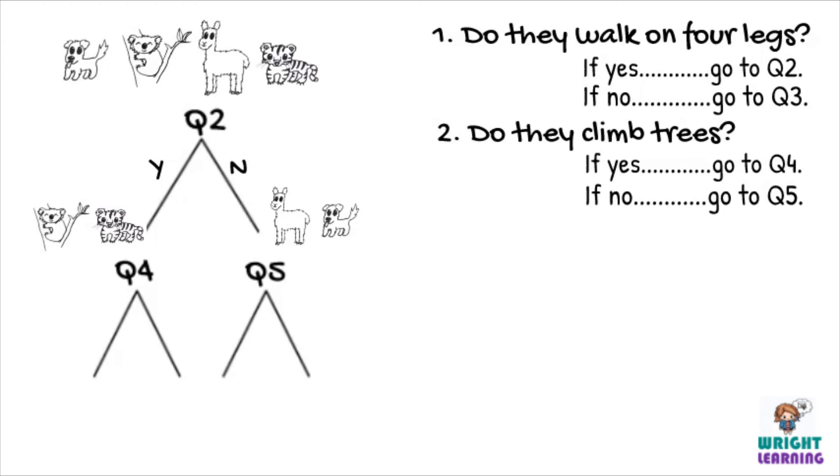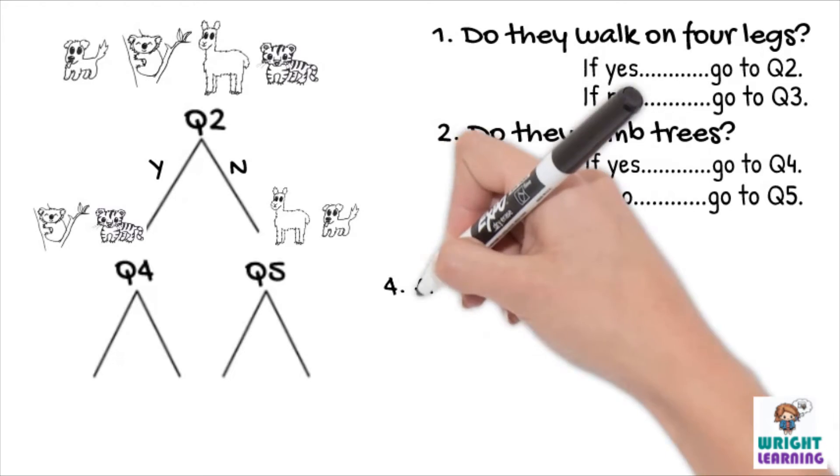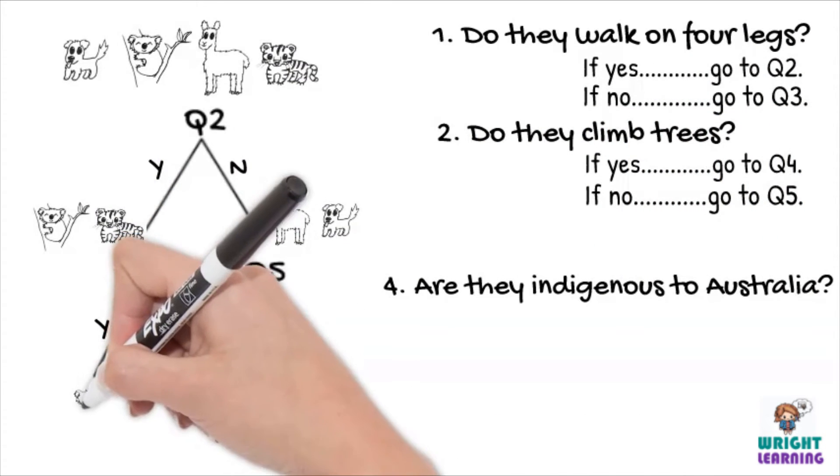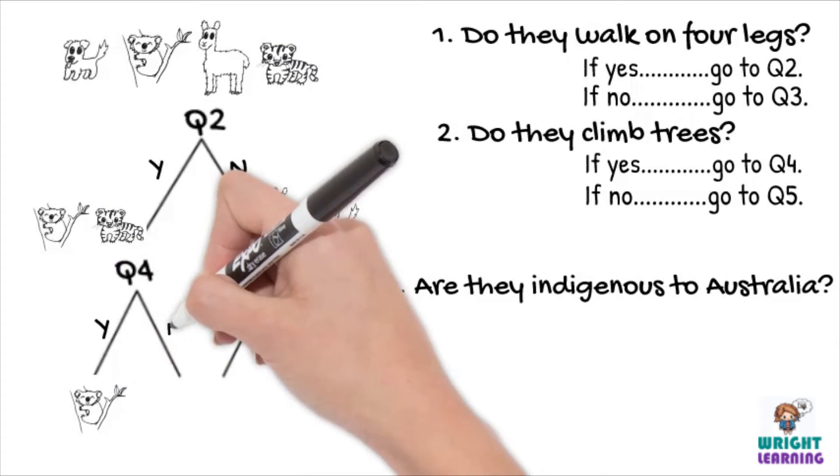So how can we distinguish between the koala and the tiger for our fourth question? We could always ask the question, are they indigenous or native to Australia? Obviously the koala is, and the tiger is not.